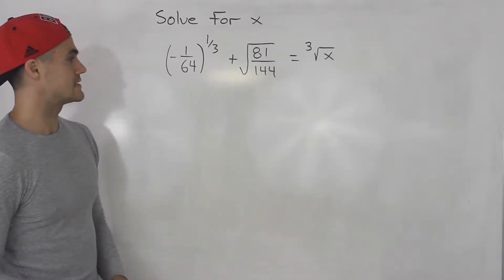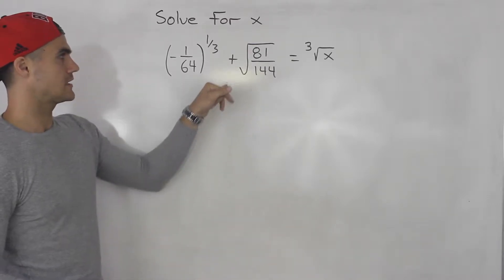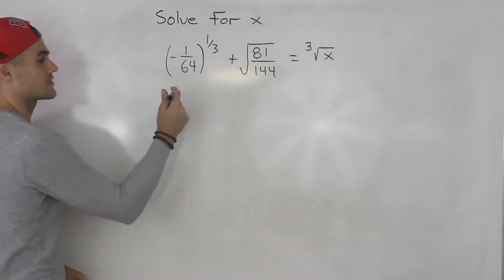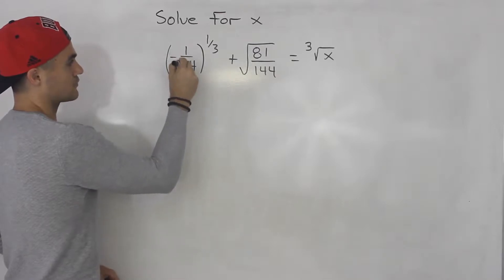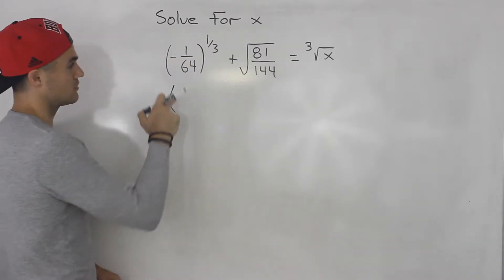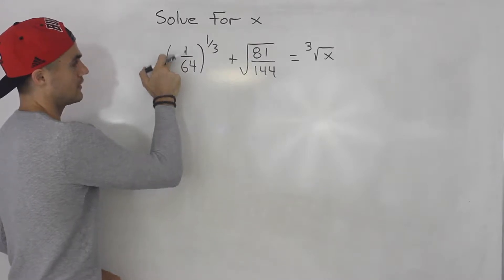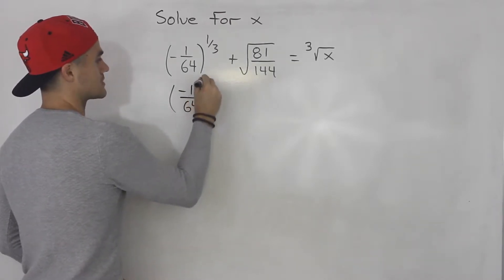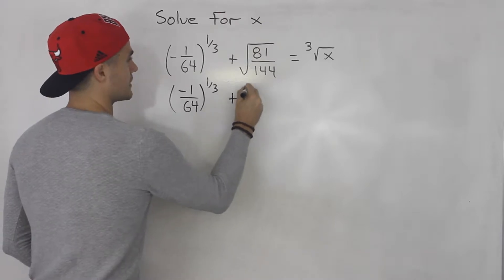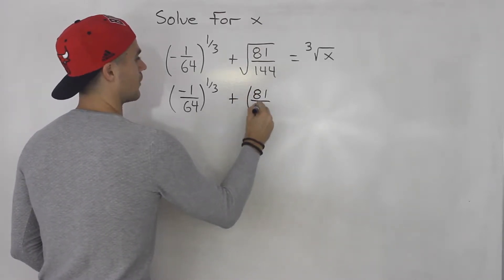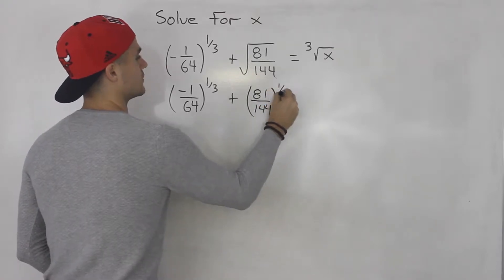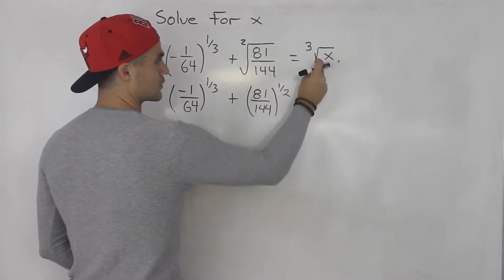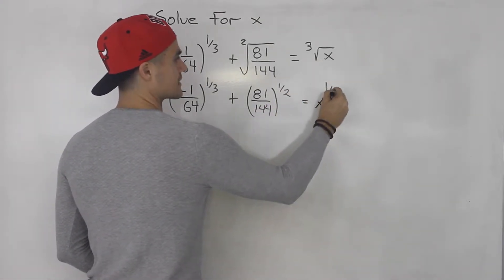The first thing I'm going to do is take any radical expressions and convert them to exponential form. So this negative 1 over 64 — I want to take the negative if it's in front and put it in the numerator. So I'm going to put negative 1 over 64 to the power 1 over 3, plus 81 over 144 all to the power of 1 over 2. If there's a square root, there's an imaginary 2 there. And the third root of x is x to the power of 1 over 3.